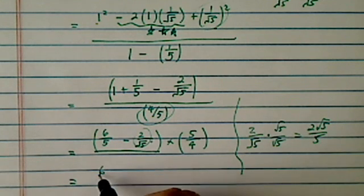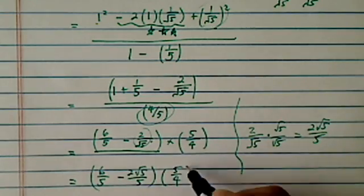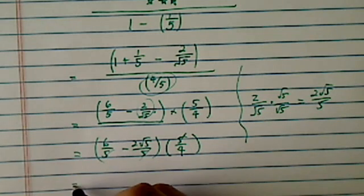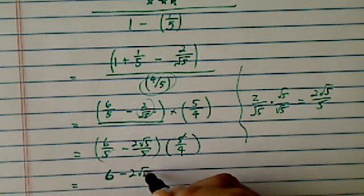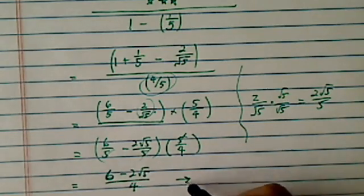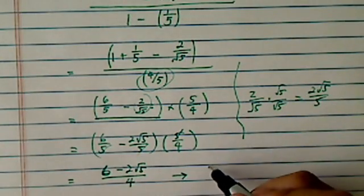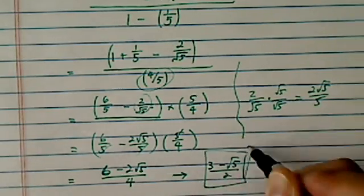Okay, so let's write it down. 6 over 5 minus 2 radical 5 over 5, the whole thing times 5 over 4. Obviously, the 5 is going to cancel, so I have a somewhat decent-looking thing. 6 minus 2 radical 5 over 4, or if you want to simplify it one more time, because of the common factor of 2, you can have 3 minus radical 5 over 2. This is the final answer.